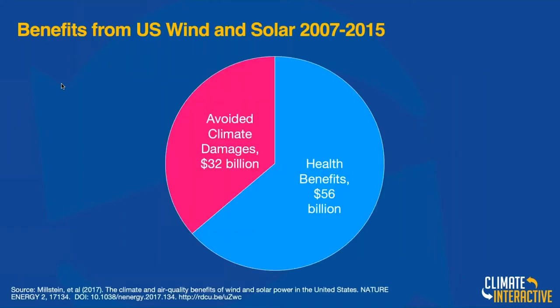This is costing a lot of money. Someone did a study of the benefits from solar energy in the US from 2007 to 2015. How much money is saved from avoided climate damages from all the growth of solar and wind? Avoided climate damages: $32 billion said this study. However, the health benefits were $56 billion — they far dwarf the financial implications from climate. So the health benefits via air quality are a strong reason to make the case for spending money as a society dealing with air pollution health impacts.